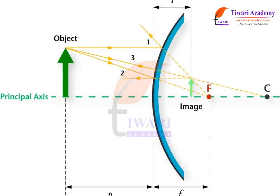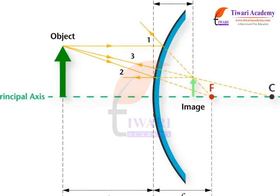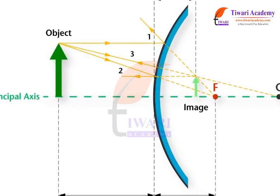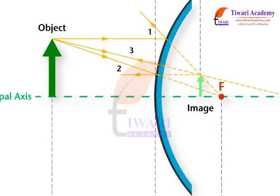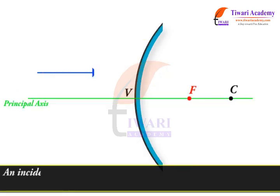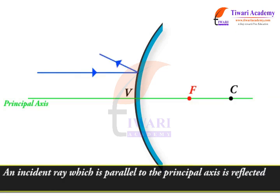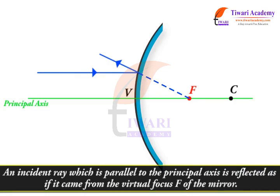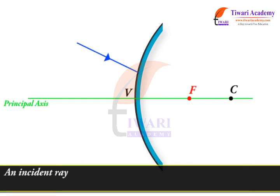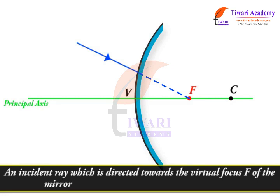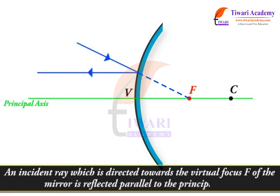The image produced by a convex mirror can always be located by drawing a ray diagram according to four simple rules. An incident ray which is parallel to the principal axis is reflected as if it came from the virtual focus F of the mirror. An incident ray which is directed towards the virtual focus F of the mirror is reflected parallel to the principal axis.